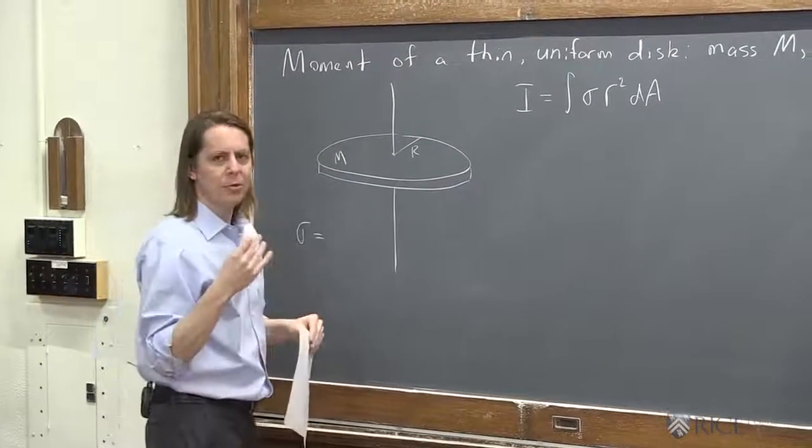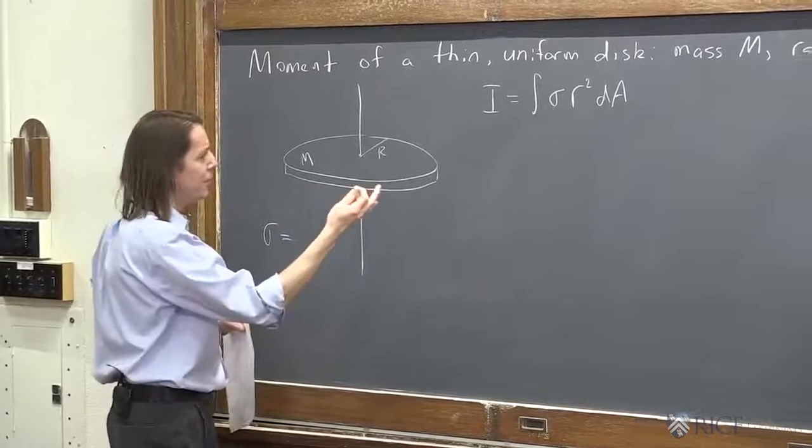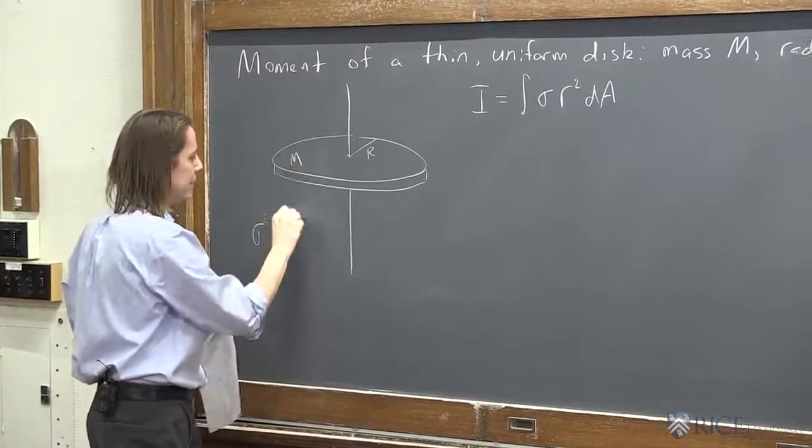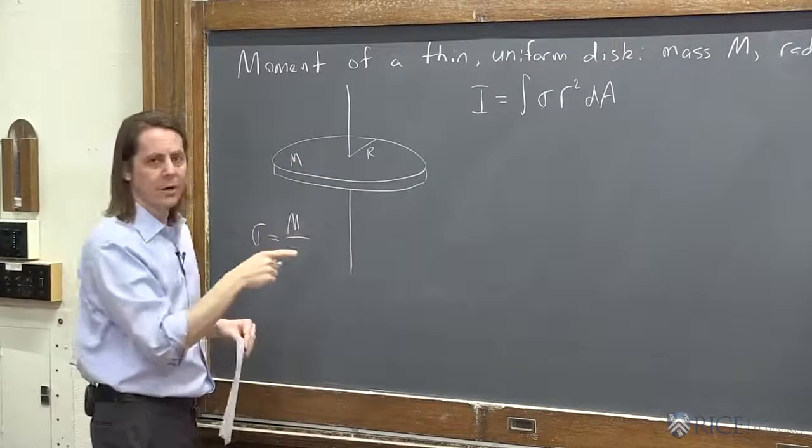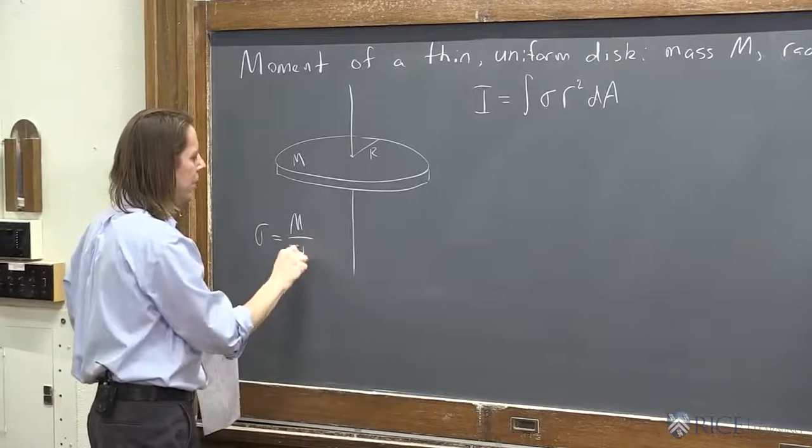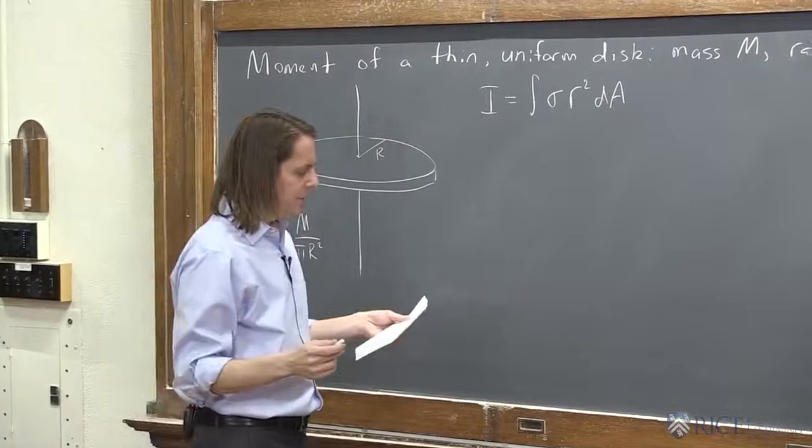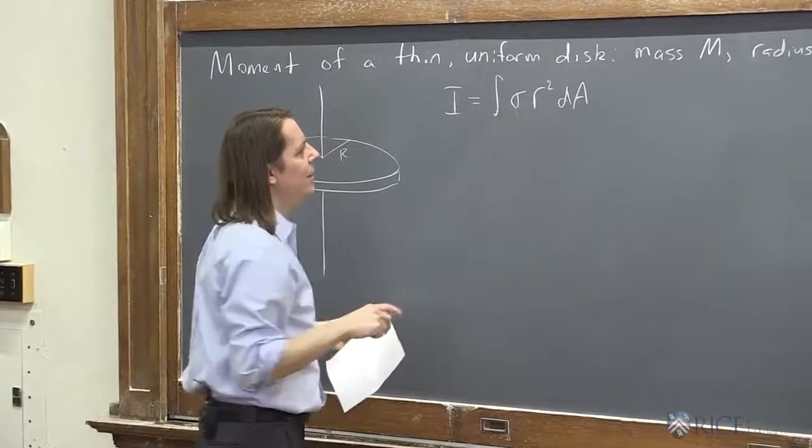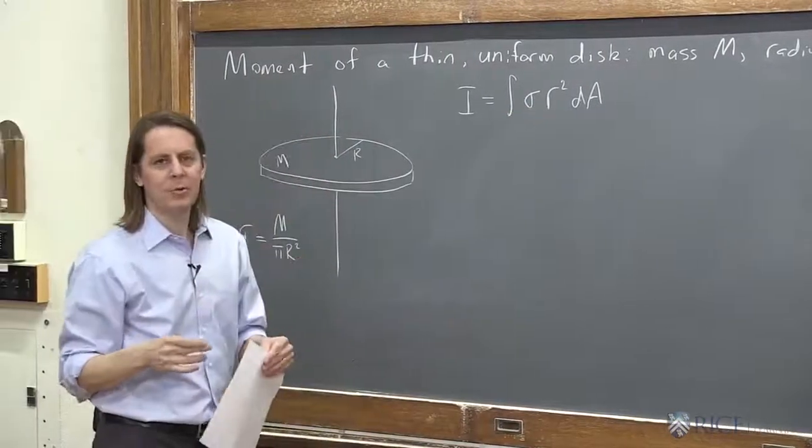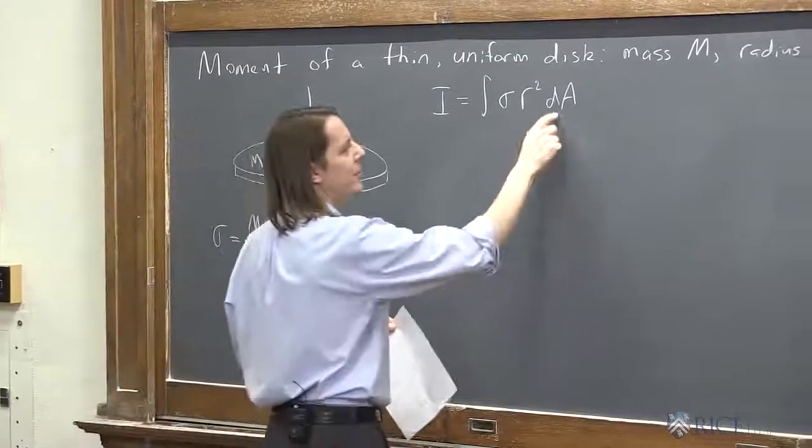Because we're doing a surface integral over the disc. And sigma was that surface mass density. So sigma is the mass per unit area. Since this one's uniform, we just say the mass divided by the entire area. So M over pi R squared is sigma. We could plug that in there. But then the real question is, how do we do the integral? We have to deal with dA.